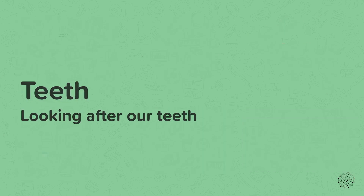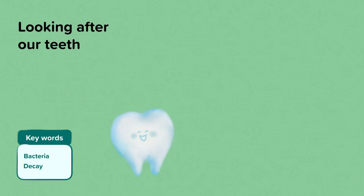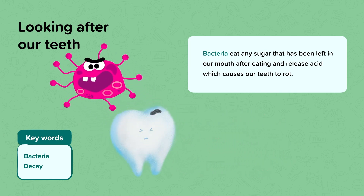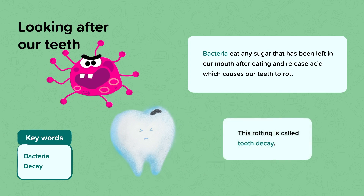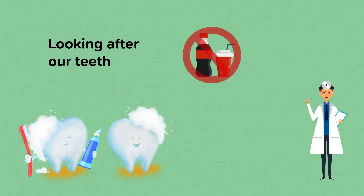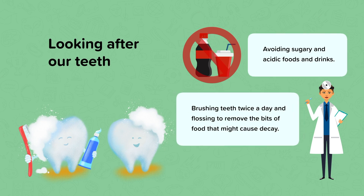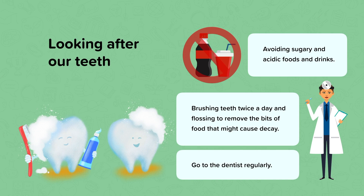Looking after our teeth. To ensure that our teeth are healthy we must look after them. If we don't, bacteria can come along and eat any sugars or food that have been left in our mouth after we've eaten. As the bacteria feeds on this leftover food it releases an acid which causes our teeth to rot. This rotting of our teeth is called tooth decay and can lead to many more problems such as having fillings or even teeth removed. There are different ways we can prevent our teeth from decaying — these include avoiding sugary and acidic foods and drinks, brushing our teeth twice a day, occasionally flossing to get rid of any food stuck between our teeth, and going to the dentist regularly to get our teeth checked.